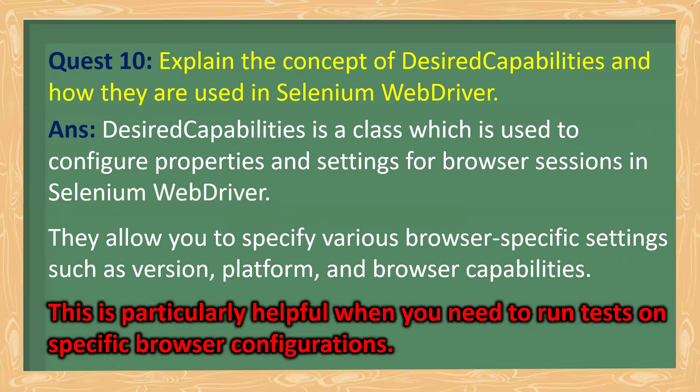Explain the concept of Desired Capabilities and how they are used in Selenium WebDriver. Desired Capabilities is a class used to configure properties and settings for browser sessions in Selenium WebDriver. They allow you to specify various browser-specific settings such as browser version, platform, and browser capabilities. This is particularly helpful when you need to run test cases on specific browser configurations.